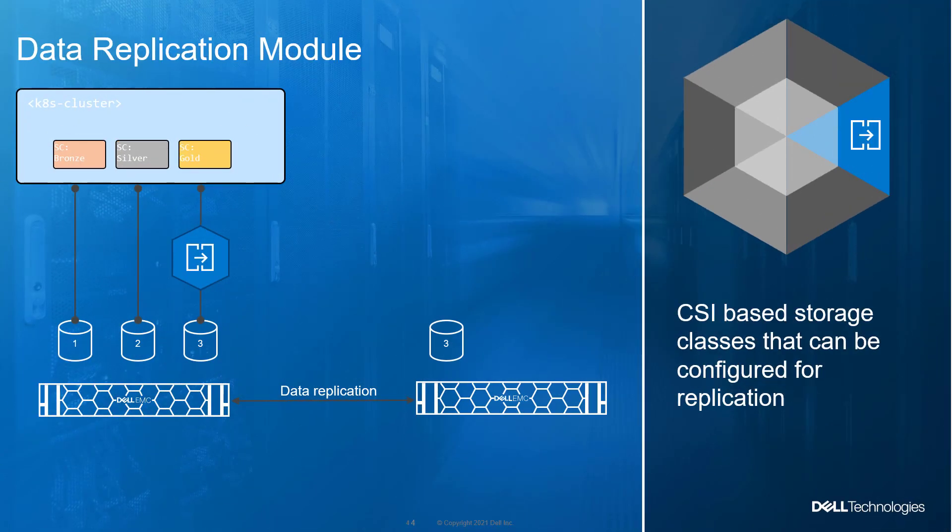Replicating data can play an important role in protecting against data loss due to storage array or site failure. Snapshots are a point-in-time recovery which provides a very quick and easy method of recovering data which has been corrupted or accidentally lost as a result of human or technological error. However, they cannot protect against catastrophic failure of the storage array or the site itself. All Dell Technology storage arrays have native synchronous or asynchronous replication mechanisms between storage arrays. Replication helps achieve five nines of availability for business-critical applications, and it's a key component of any disaster recovery plan. With the replication module in place, a Kubernetes user can decide that their stateful application uses a volume replicated to another site by choosing a storage class that specifies replication.